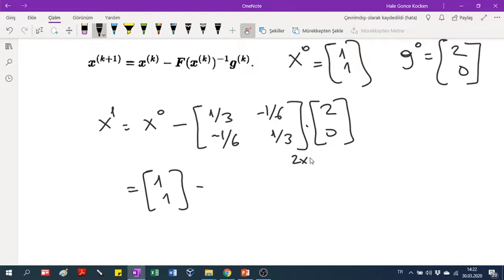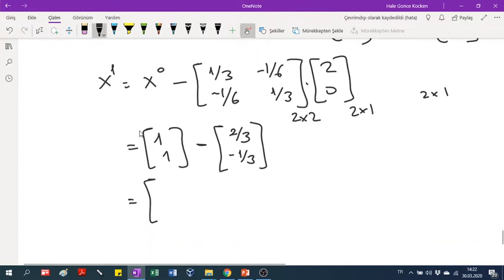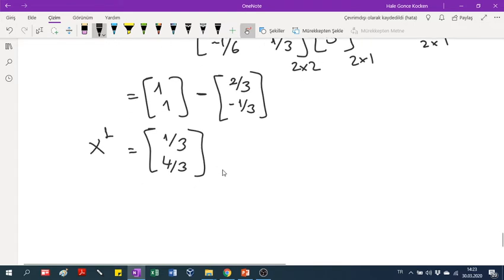I'm multiplying a 2 by 2 matrix by a 2 by 1, so the result will be 2 by 1. So I will write a 2 by 1 vector. 1/3 times 2, so it will be 2/3. Minus 1/6 times 2, minus 2/6 or minus 1/3. Don't forget that there is a minus sign between the vectors. So the first one will be 1 minus 2/3, which is 1/3, and the second one will be 4/3. Anyway, you found your x1 point as 1/3 and 4/3.